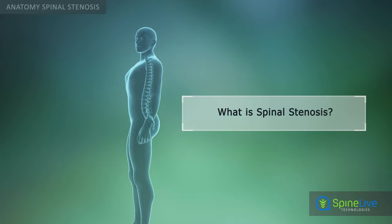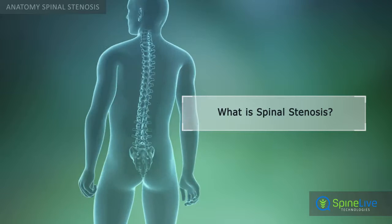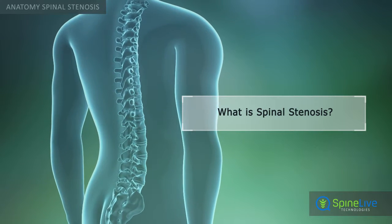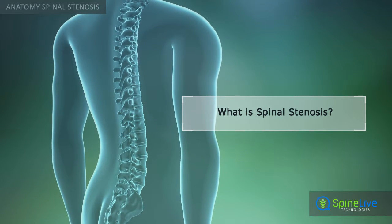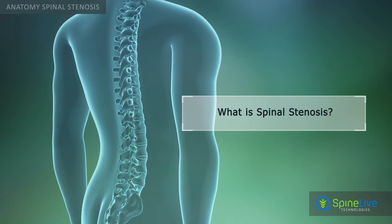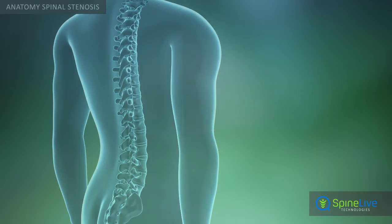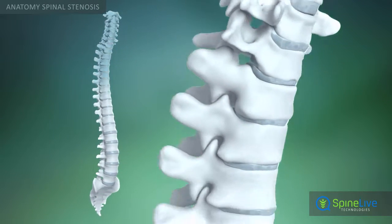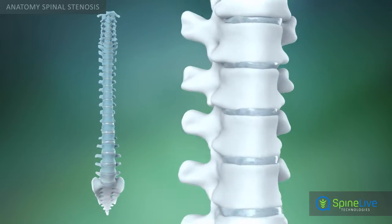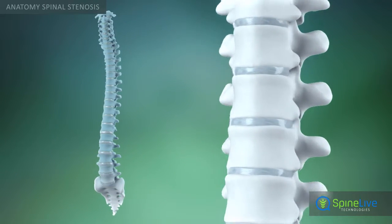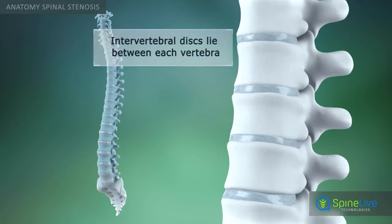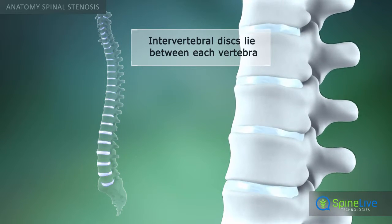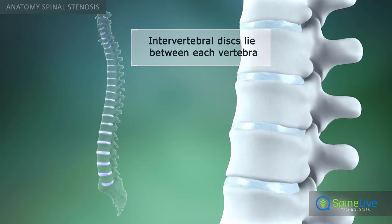In order to understand what is spinal stenosis, it's helpful to know the basic anatomy of the spine. The spine is made up of 33 individual bones called vertebrae, which are separated by intervertebral discs.